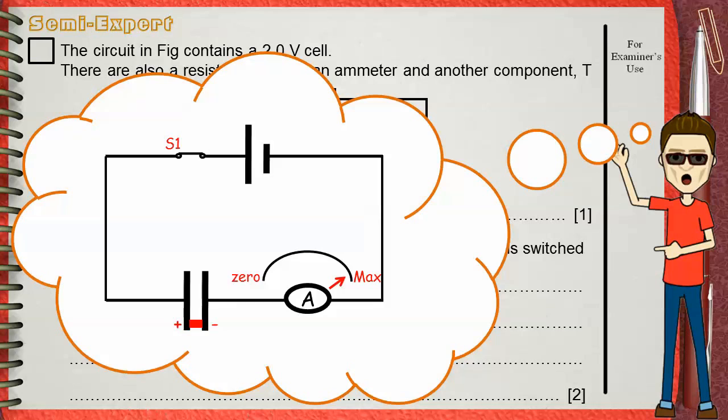As time goes, the capacitor charges more. This decreases the amount of current allowed to pass through the capacitor, so the ammeter reading will decrease.